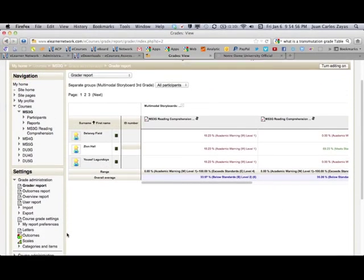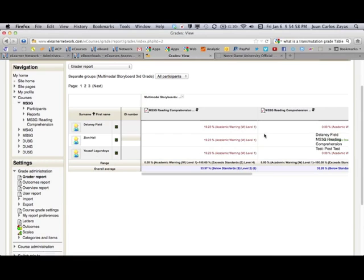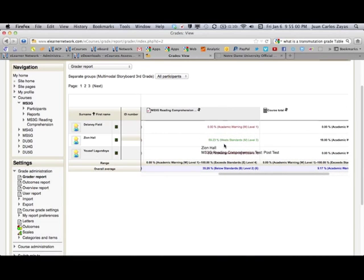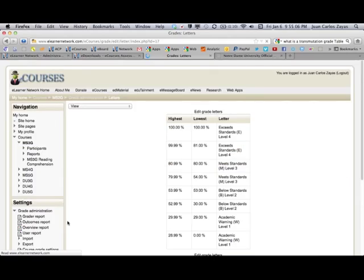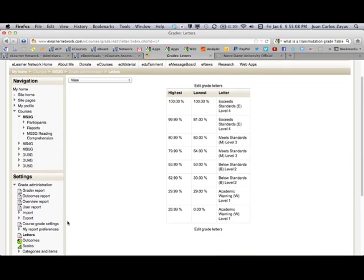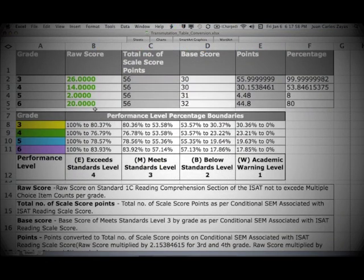The same formula for transmuting grades and performance levels are used here in eCourses. This provides for immediate feedback. That's how eCourses uses the transmutation of performance levels by converting a raw scale score point. Thank you for watching.